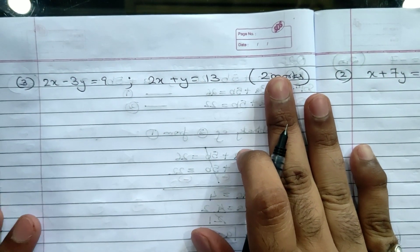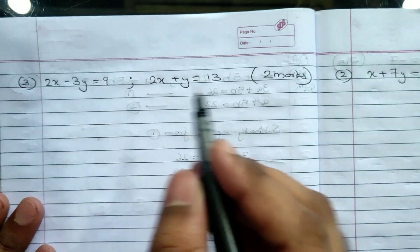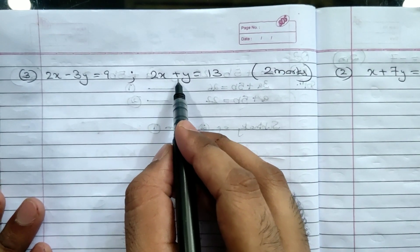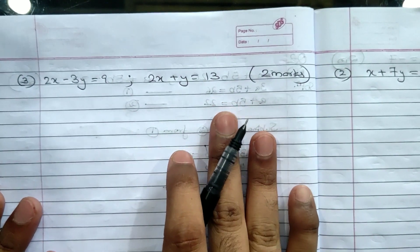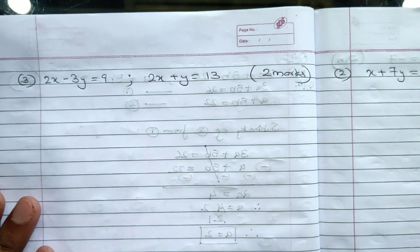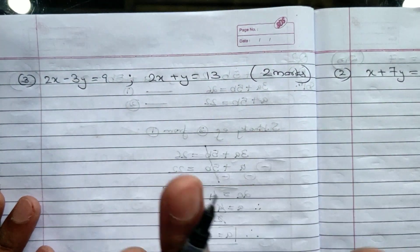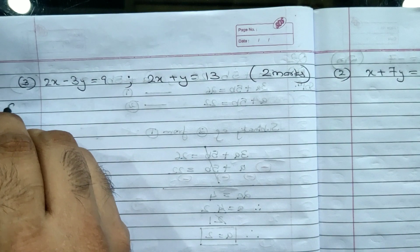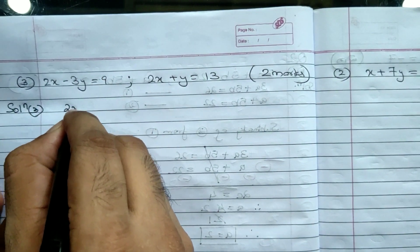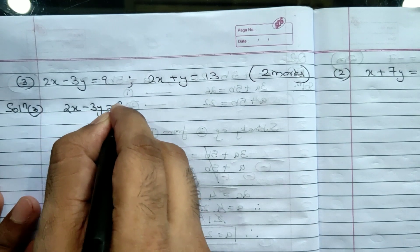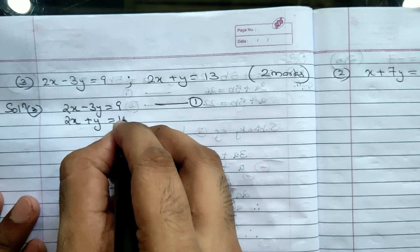Let us take the second sum for the day, that is sum number 3. Let us go through sum number 3. 2x minus 3y equals 9, and 2x plus y equals 13. If you understand, pause the video and try to solve on your own, then check your answer.